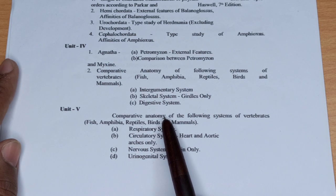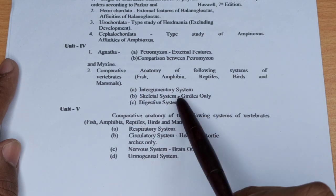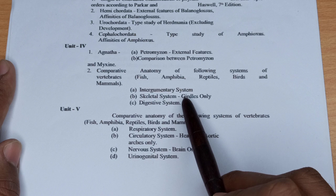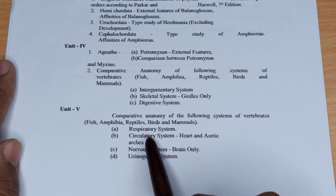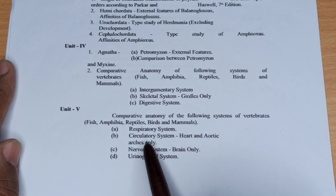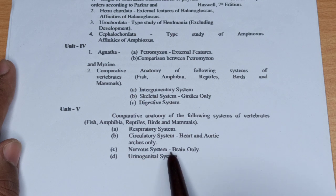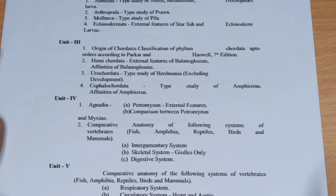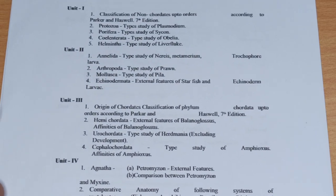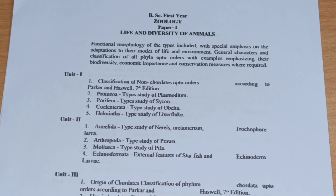Unit 5 में comparative anatomy of the following systems of vertebrates: Integumentary System, Skeletal System (girdles), Digestive System, Respiratory System, Circulatory System (heart and aortic arcs only), Nervous System (brain) और Urinogenital System पढ़ेंगे। यह था Zoology Paper No. 1 का overall syllabus जिसमें 5 units हैं।